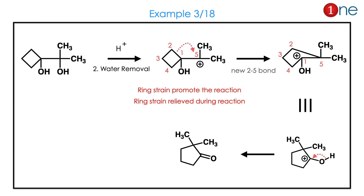Let us look at the next question. You have a 4-membered ring and a 2-methyl group. Which one will migrate? The 4-membered system is very strained, so it will migrate better than the methyl group. A new 2-5 bond forms through ring expansion, relieving the strain. The 4-membered ring becomes a 5-membered ring, and the final product is the ketone.